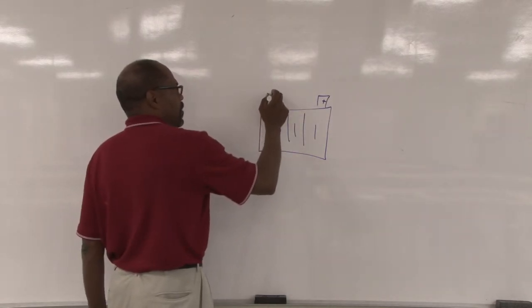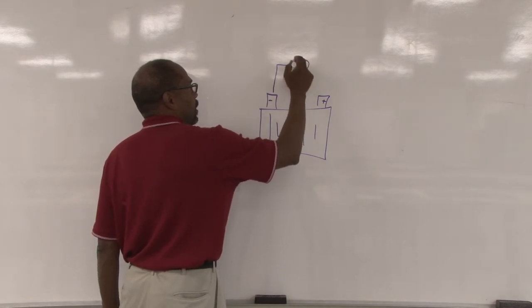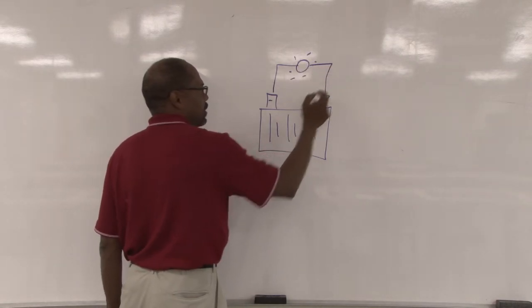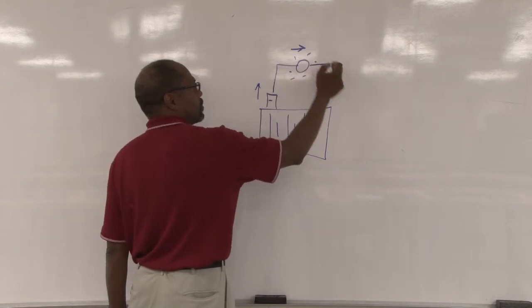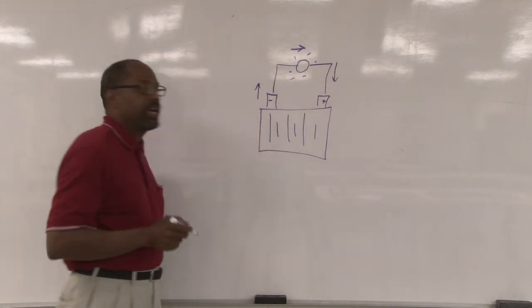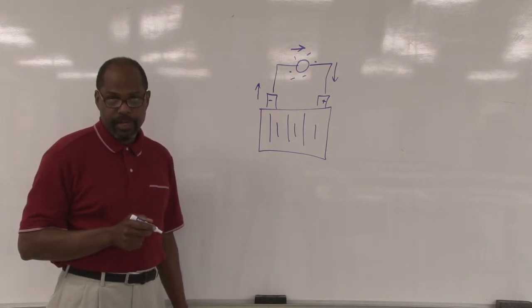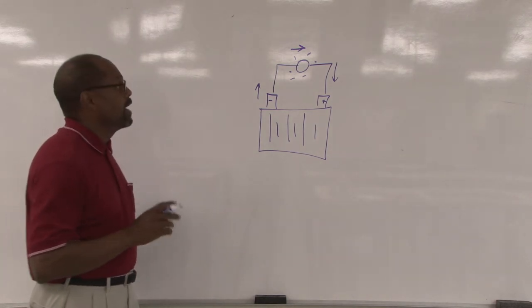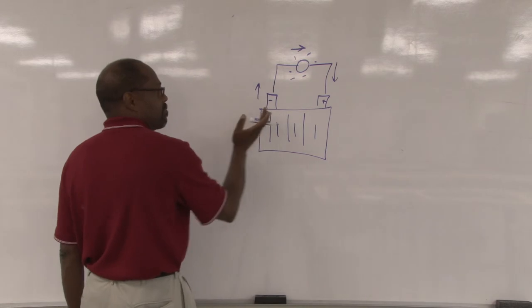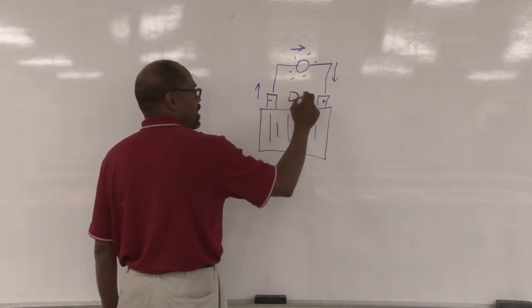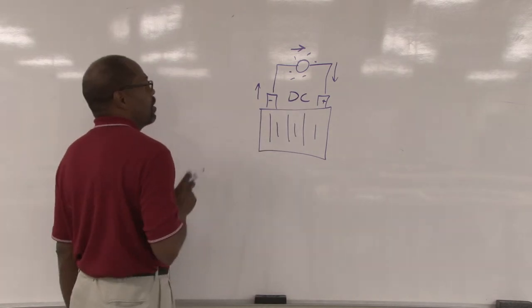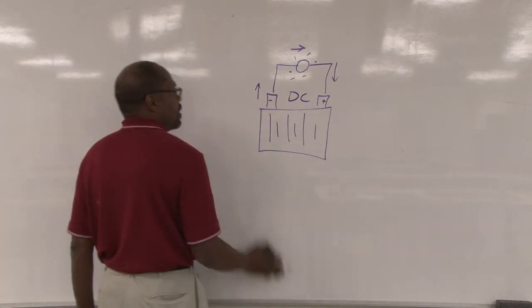If we put a light bulb between them, the current will flow from negative to positive. That's important to keep in mind because current flows from negative to positive all the time. And this will be DC current, direct current.